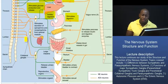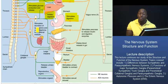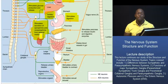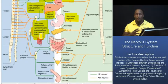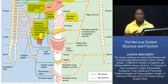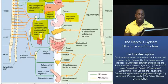The sympathetic division will also mediate a few responses unique to itself — for instance, the release of epinephrine and norepinephrine from the adrenal medulla. Those are two important hormones involved in fight or flight responses, and they do things such as accelerating our heart rate, increasing our rate of ventilation, and pretty much preparing our bodies for action. Those are some of the key differences between the sympathetic and the parasympathetic responses.